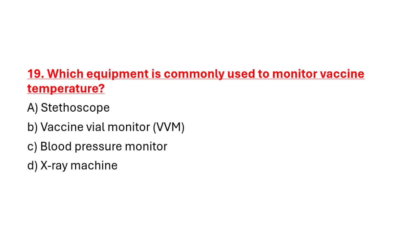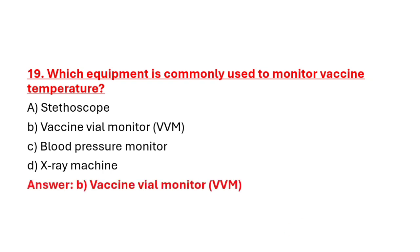Question 19: Which equipment is commonly used to monitor vaccine temperature? Option A: Stethoscope. Option B: Vaccine vial monitor. Option C: Blood pressure monitor. Option D: Extreme machine. Correct answer is Option B: Vaccine vial monitor.